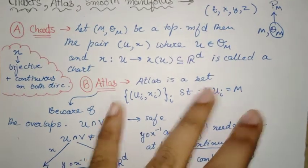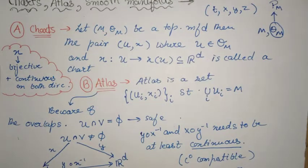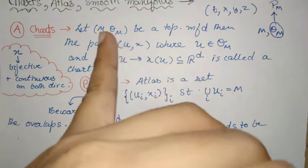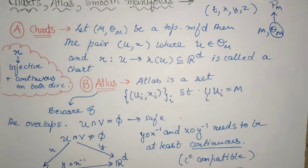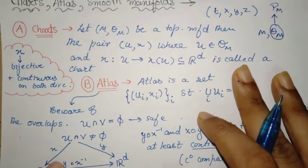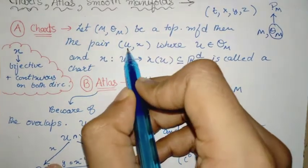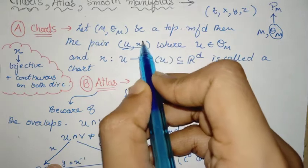If for every point I have such a homeomorphism, I call that M and theta M together - the topological space forms a topological manifold.